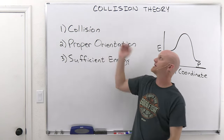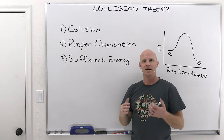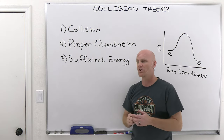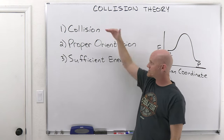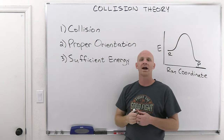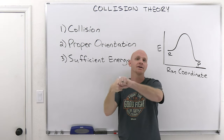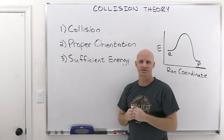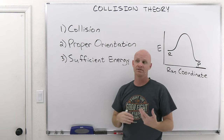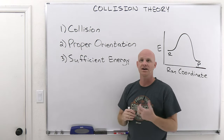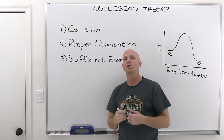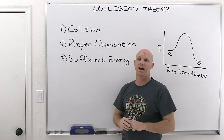Let's start with collision theory. At the molecular level, it describes the requirements that need to take place for a chemical reaction to occur. The first requirement is that there's got to be a collision — if two molecules are going to react with each other, they need to collide. You can see why higher concentrations of reactants generally lead to faster reactions: more reactants closer together means they collide more often, leading to a faster reaction.